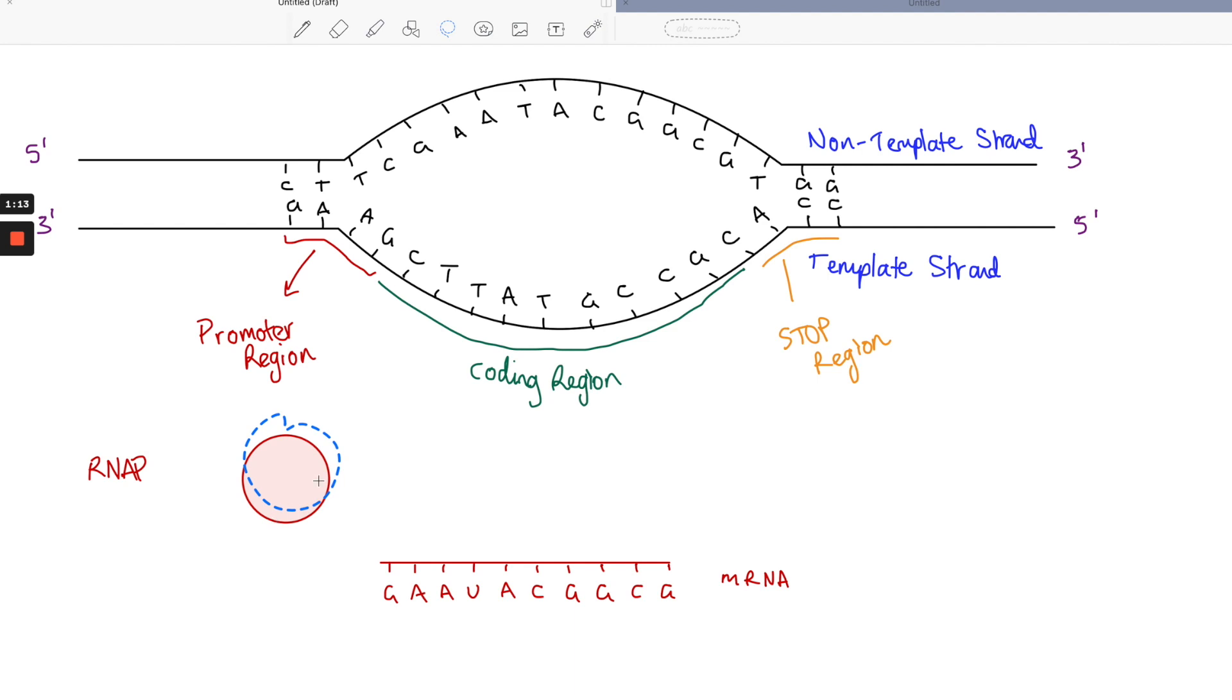We can use this setup to break down the process of transcription into three steps: initiation, elongation, and termination. First, in initiation, the RNA polymerase or RNAP binds to the promoter region just like this on the gene.